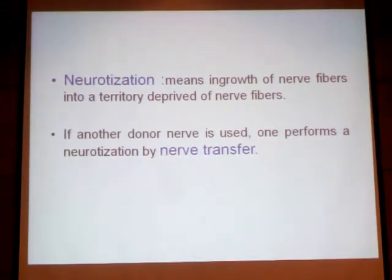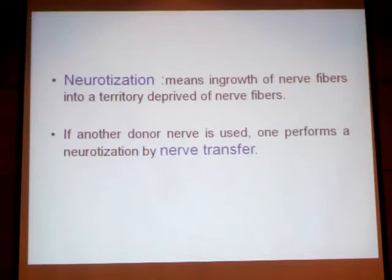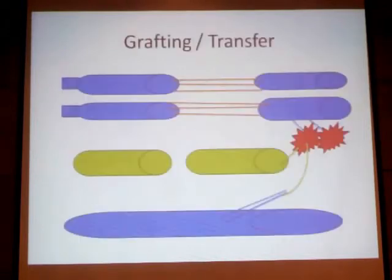Nerve fibers can be derived from nearby intact nerve fibers. If we do this, we call it a nerve transfer. We perform the nerve transfer from an intact donor nerve to the injured recipient nerve. This restores the function — and that is the term: nerve transfer.